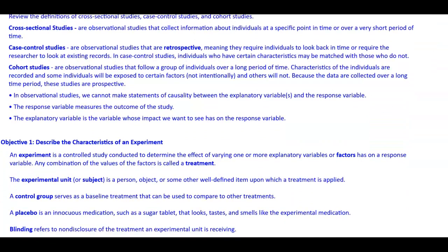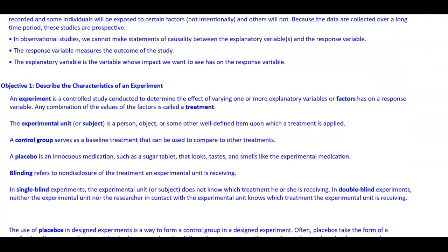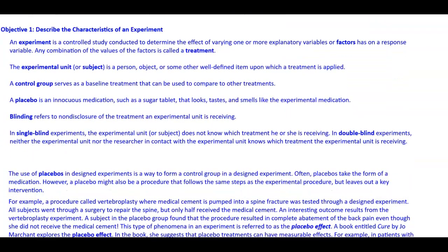The first objective is to describe the characteristics of an experiment. An experiment is a controlled study conducted to determine the effect of varying one or more explanatory variables or factors on a response variable. Any combination of the values of the factors is called a treatment. The experimental unit or subject is a person, object, or some other well-defined item upon which a treatment is applied.